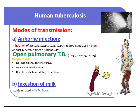Mode of transmission is either airborne infection or ingestion of milk. Airborne infection occurs by inhalation of Mycobacterium tuberculosis in droplet nuclei or dust generated from a patient with open pulmonary tuberculosis through coughing, sneezing, and talking. People at risk are laboratory technicians, doctors, nurses, contacts with an index case, HIV patients, diabetics, and end-stage renal failure patients. The second mode of transmission is ingestion of milk contaminated with Mycobacterium bovis.